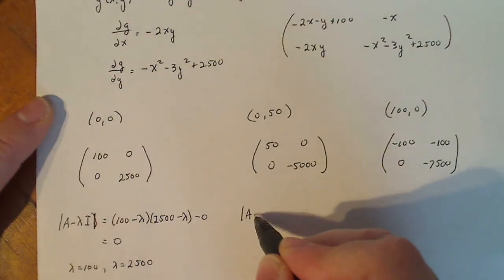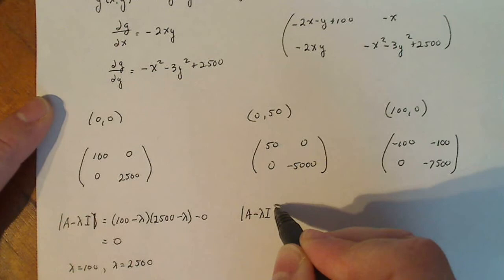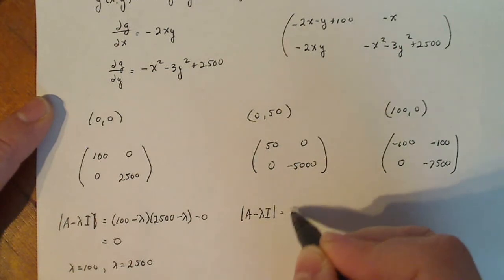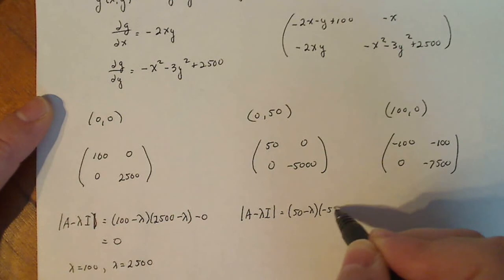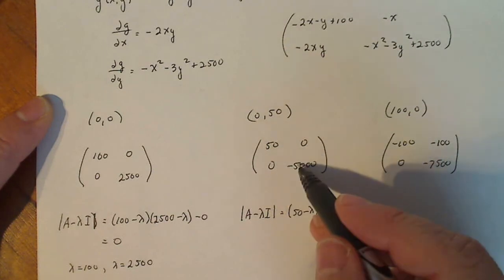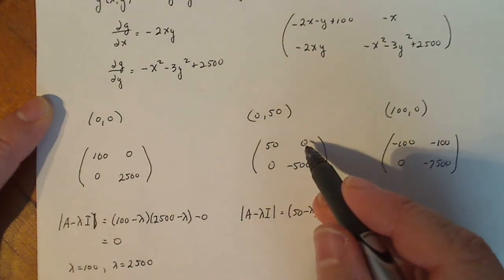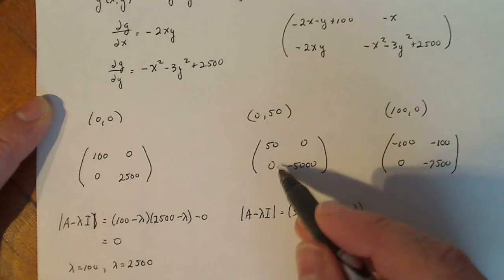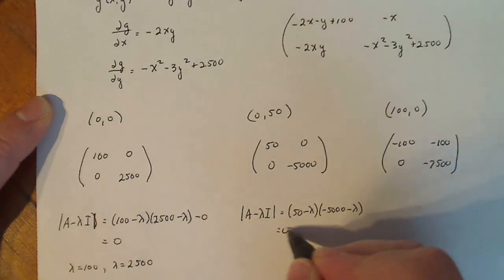Over here, I do A minus lambda I, get 50 minus lambda times minus 5,000 minus lambda minus 0. Because this product and this product for the determinant, that's going to give me 0. This is supposed to be equal to 0, so that leaves lambda is equal to 50, and lambda is equal to minus 5,000. So this is a saddle.